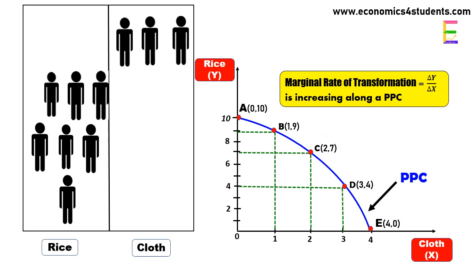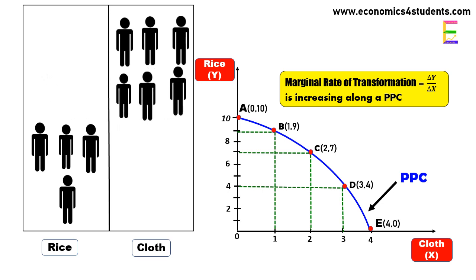If we still want to increase cloth production by one more unit, this time we need to shift three laborers, as these laborers are highly specialized for rice production with no knowledge of cloth production. Their efficiency in cloth production will be so low that we need three laborers to produce one extra unit of cloth, but in doing so we have to reduce rice production by three units due to transfer of resources. The economy now moves to point D on the PPC.